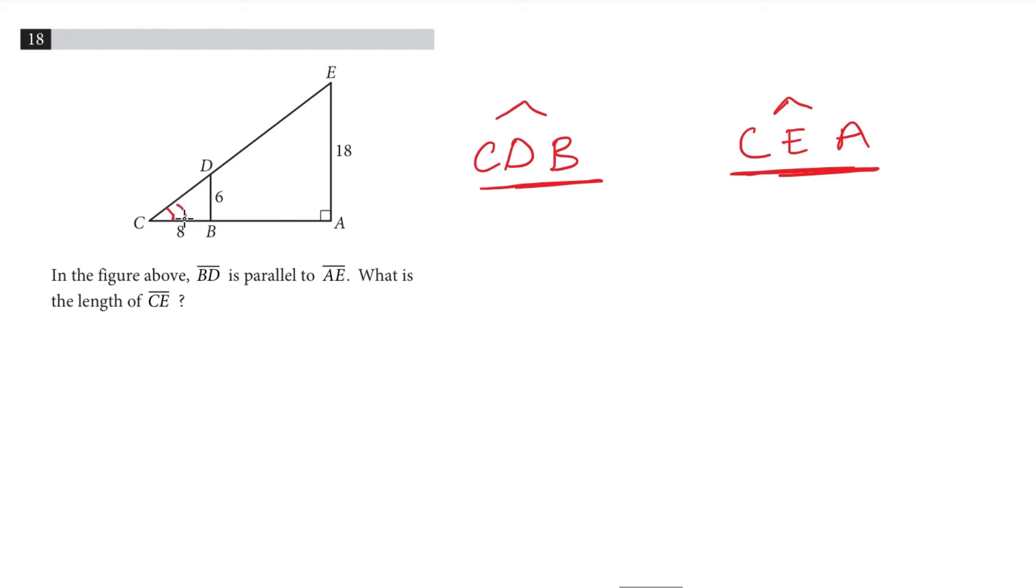That means all angles are actually the same. And there's a very important thing you need to know about similar triangles. They are proportional. That means there is always a ratio in the length of the sides of those triangles.